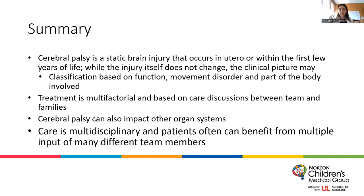One important point I wanted to add: in hemiplegic cerebral palsy, where one arm and one leg are affected — most commonly due to something like an MCA stroke — studies have demonstrated that even on the unaffected side, when compared to age-matched peers, you will see some impairments. It is very important to do a thorough physical exam and look for those subtle findings.